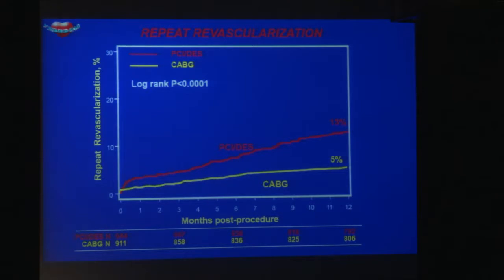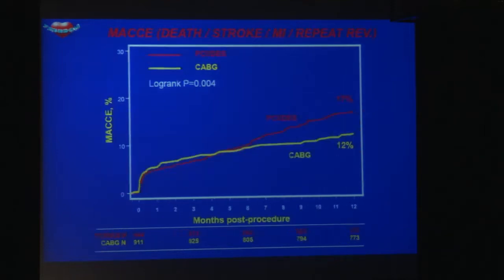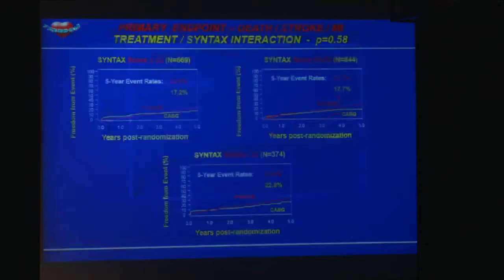In terms of repeat revascularization, the rate at 12 months was 13% with PCI and 5% with CABG. At five years, this widened to 30% versus 13%. The MACE composite — death, stroke, myocardial infarction, and repeat revascularization — at 12 months was 17% for PCI and 12% for CABG, a statistically significant difference.